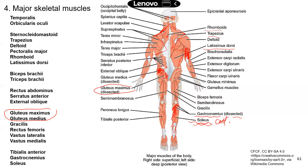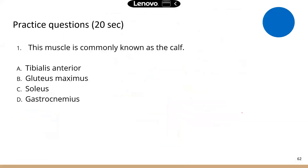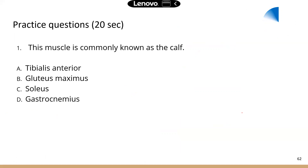I think we went over everything. First practice question: the calf muscle is gastrocnemius — D is the correct answer.